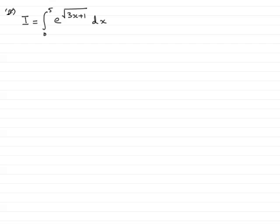In part c, we're asked to find the exact value of i, the integral from 0 to 5 of e to the root of 3x plus 1. Now in order to do this, we're asked to use a substitution, t equals 3x plus 1 to the half. So if we're going to use substitution,